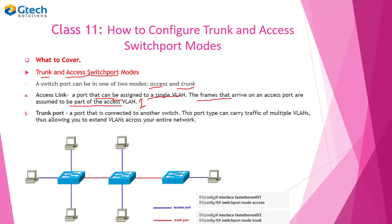A trunk port is connected to another switch. This port type can carry traffic of multiple VLANs, while in access mode, only a single VLAN. Trunk carries multiple VLANs, but access carries only a single VLAN.